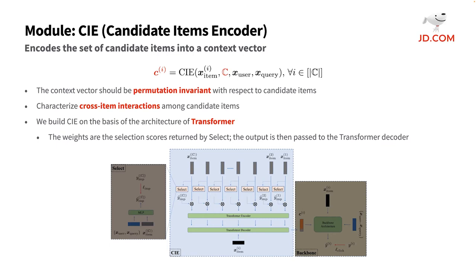Therefore, we build CIE on the basis of the transformer architecture. Specifically, the transformer encoder derives the weighted embeddings of all the candidate items, of which the weights are the selection scores returned by the SELECT submodule. The output is then passed to the transformer decoder. Together with the target item, the transformer decoder outputs the final context vector.